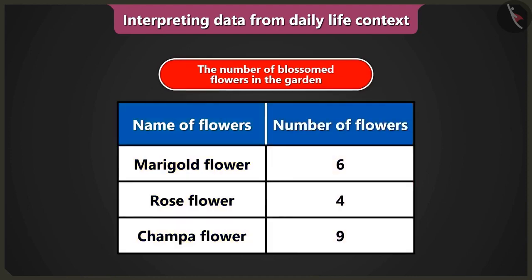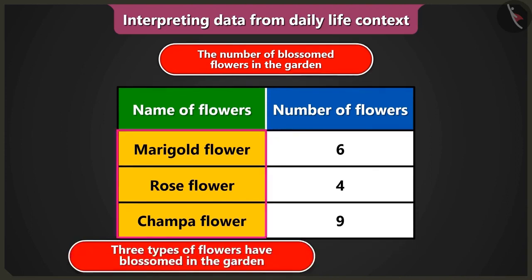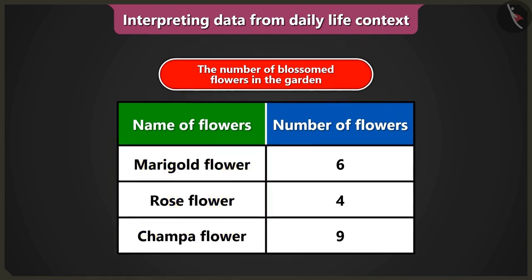There are two columns in the table. In the first column, the blossomed flowers in the garden are written. The names of the flowers are miracle flower, rose flower, and chumpa flower. From this data, we can know that three types of flowers have blossomed in the garden. First is miracle flower, second rose flower, and third is chumpa flower.